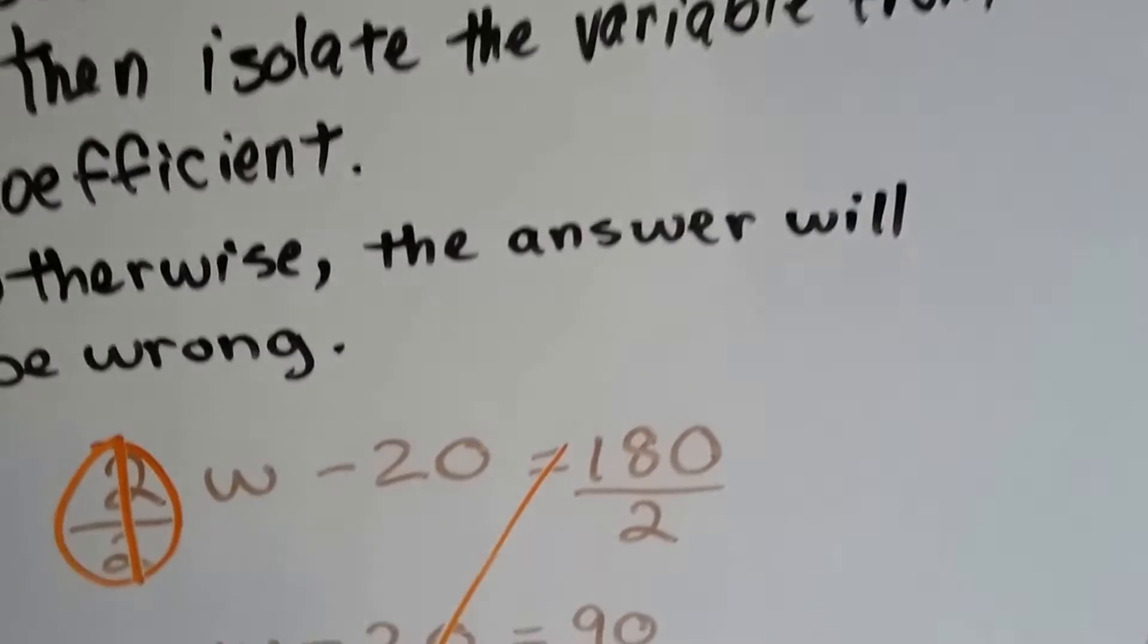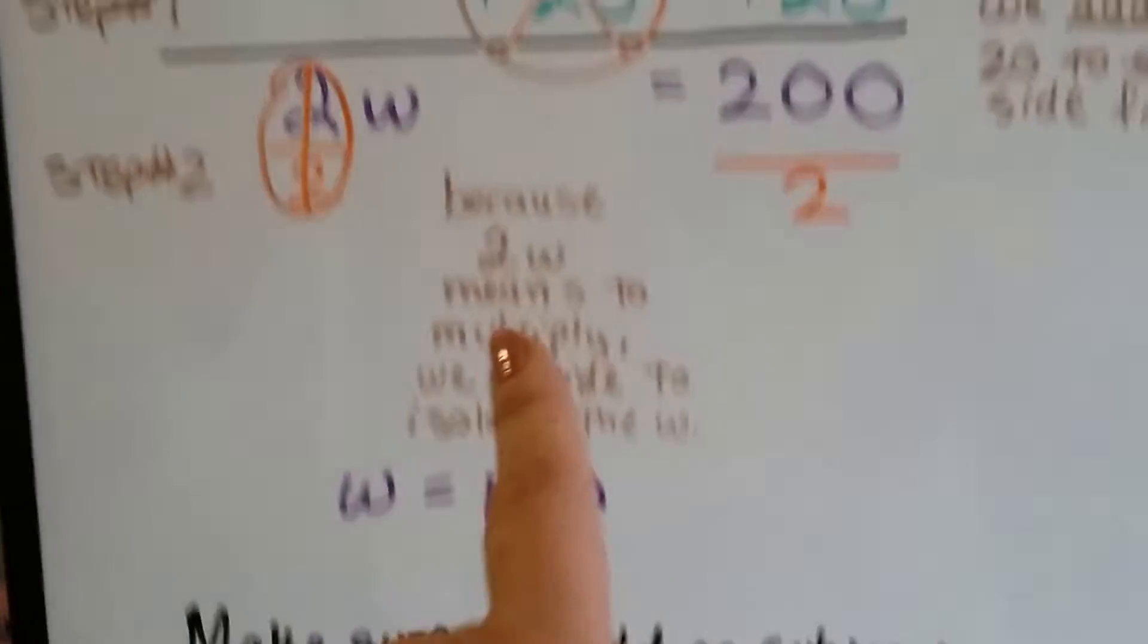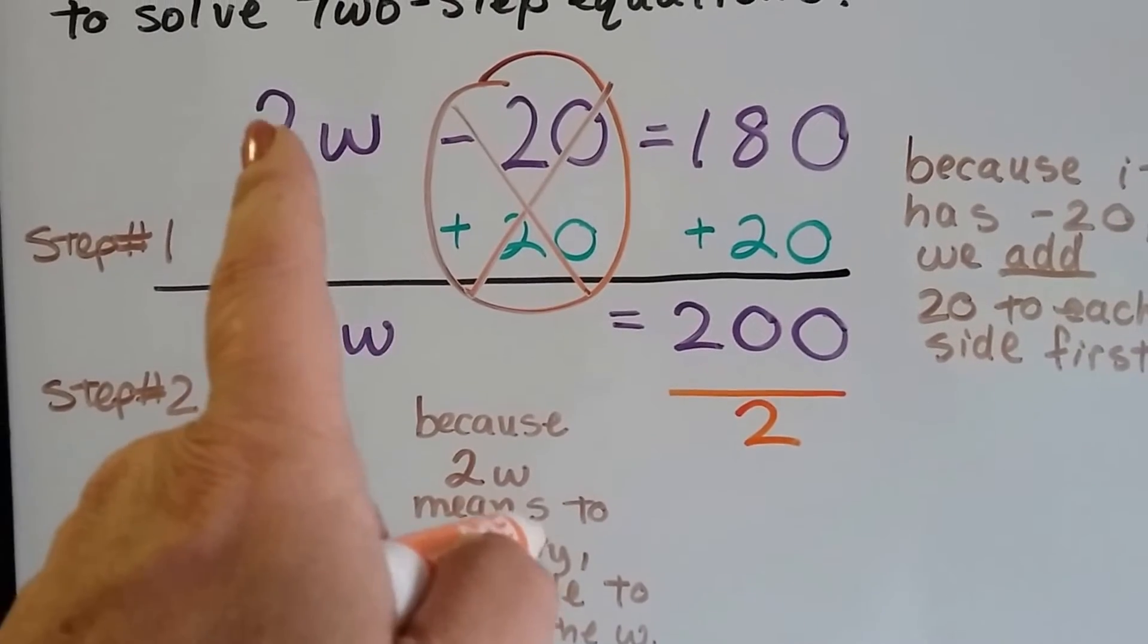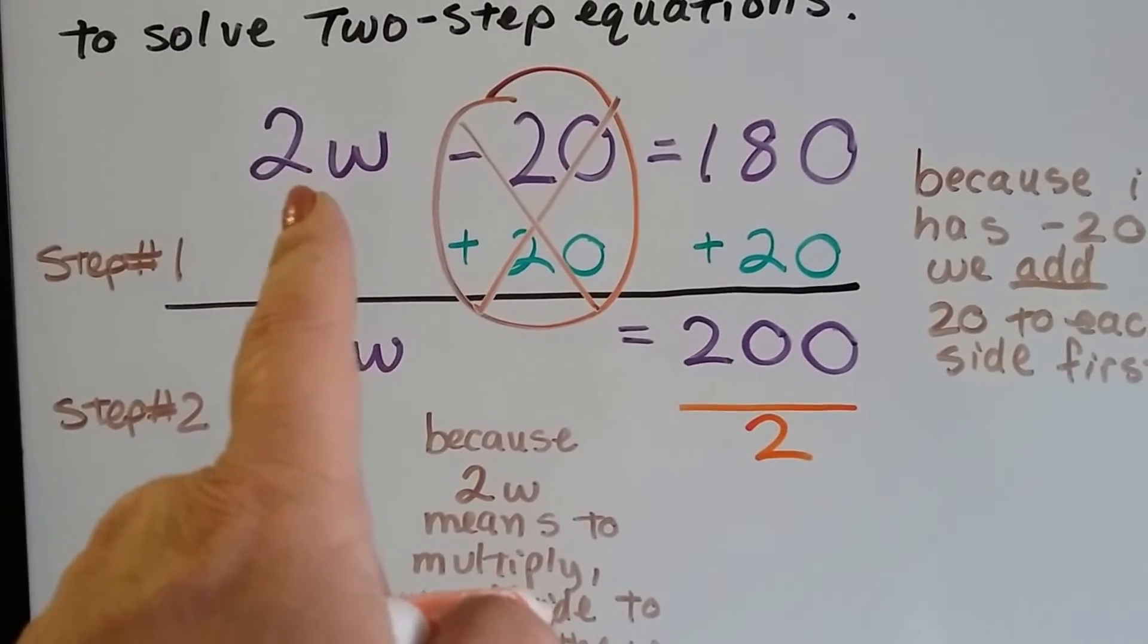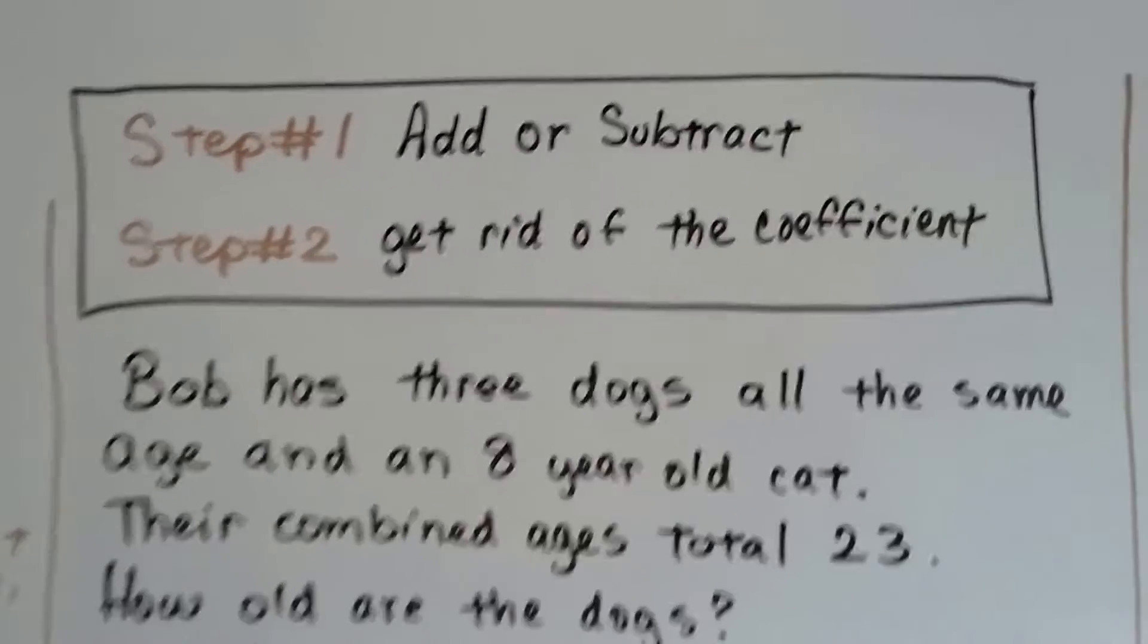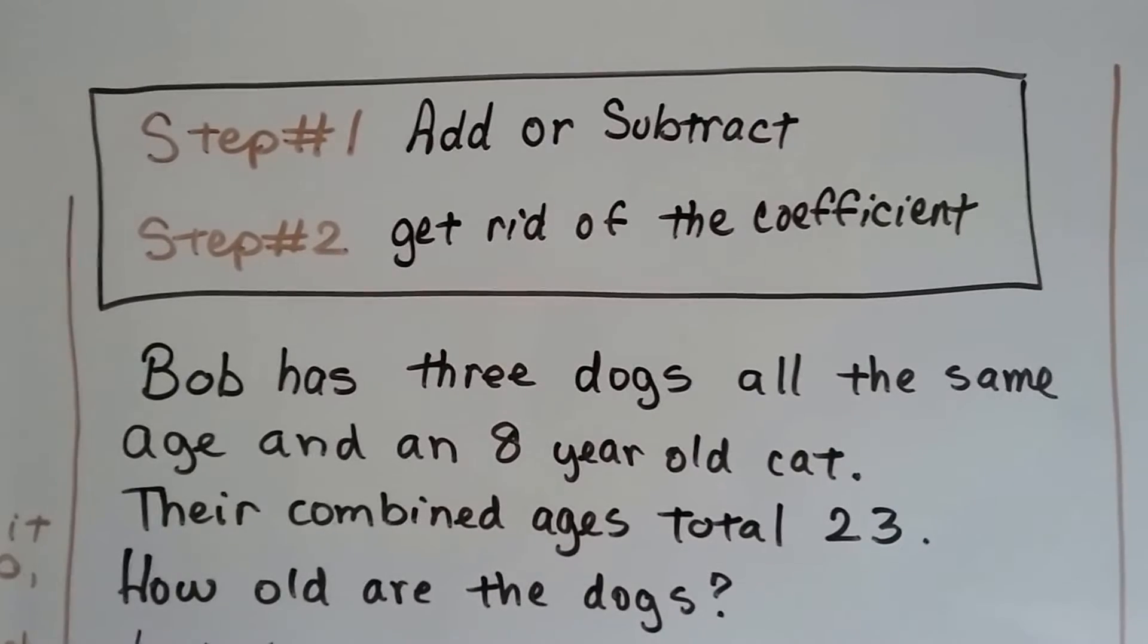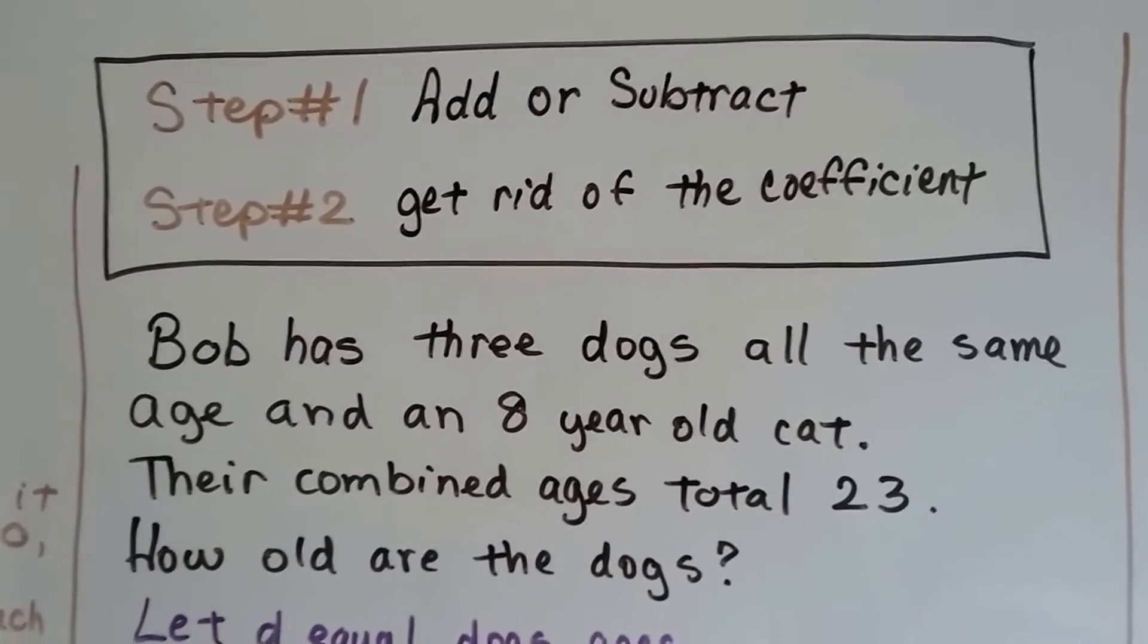We have to do our addition and subtraction first and then worry about the variable and its coefficient. We do those last. So step 1 would be to add or subtract to get rid of that number. And then step 2 would be to get rid of the coefficient next to the variable.